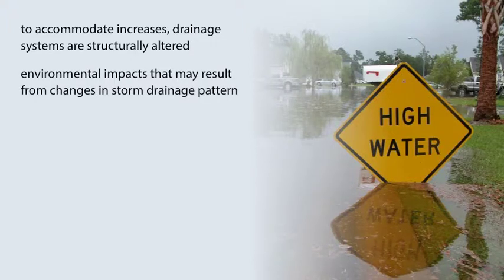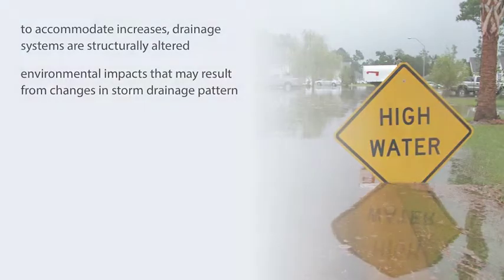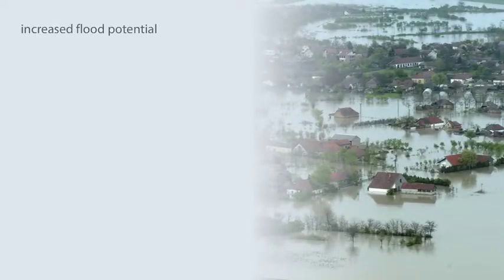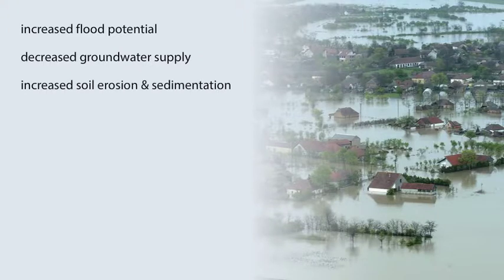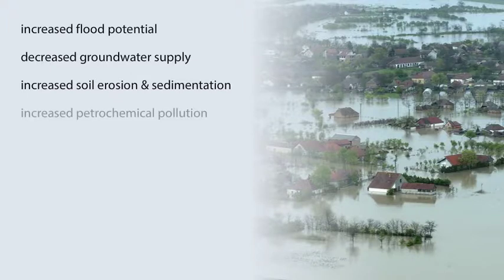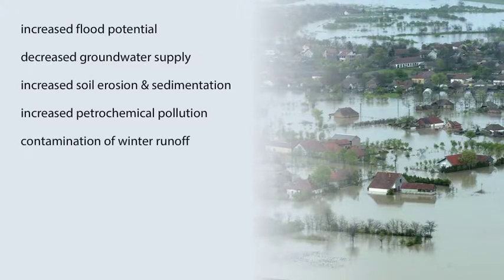There are several environmental impacts that may result from changes in the storm drainage pattern. These include increased flood potential due to increases in peak flow rates, decreased groundwater supply caused by reduced infiltration, increased soil erosion and sedimentation brought about by greater runoff volumes and velocities, increased petrochemical pollution from street and highway runoff, and the contamination of winter runoff by salt and sand in colder regions.